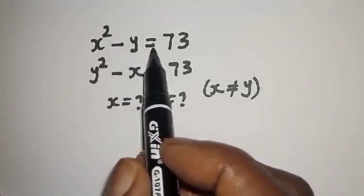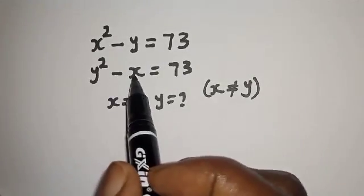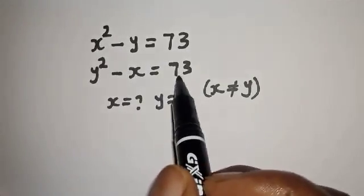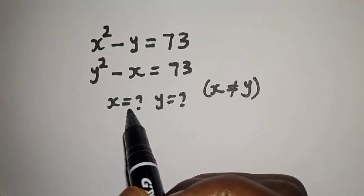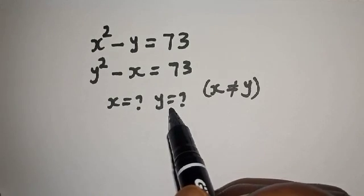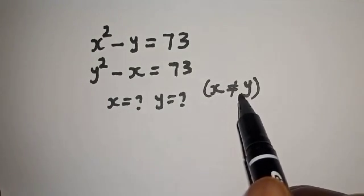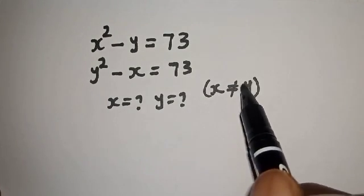S squared minus Y is equal to 73. Y squared minus S is equal to 73. What is the value of S and what is the value of Y, such that S is not equal to Y?